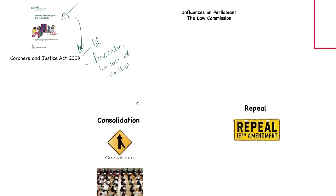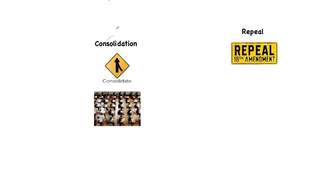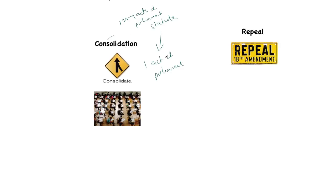That's slightly different to consolidation. Consolidation means bringing many Acts of Parliament or statute into one Act of Parliament. Whereas codification brings all sorts of areas of the law — case law, academic law — into one Act of Parliament, consolidation brings many Acts of Parliament into one Act of Parliament. It does that in order to make the law more understandable and accessible, and it does not require changes in the law — it just brings it together.